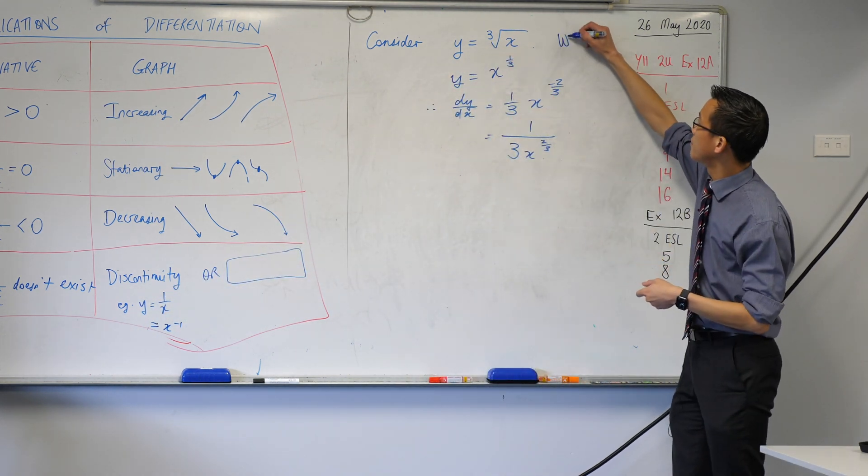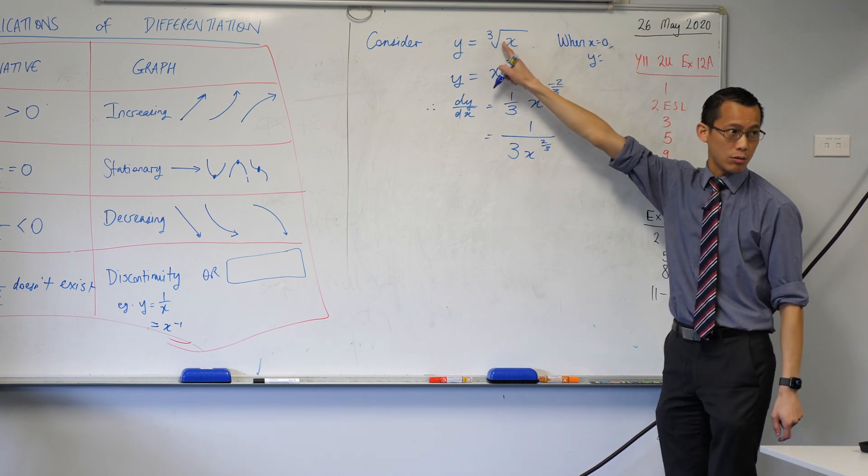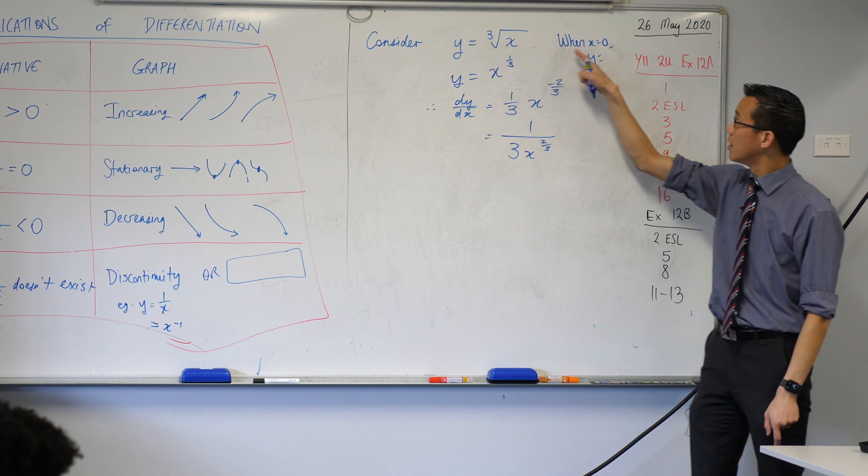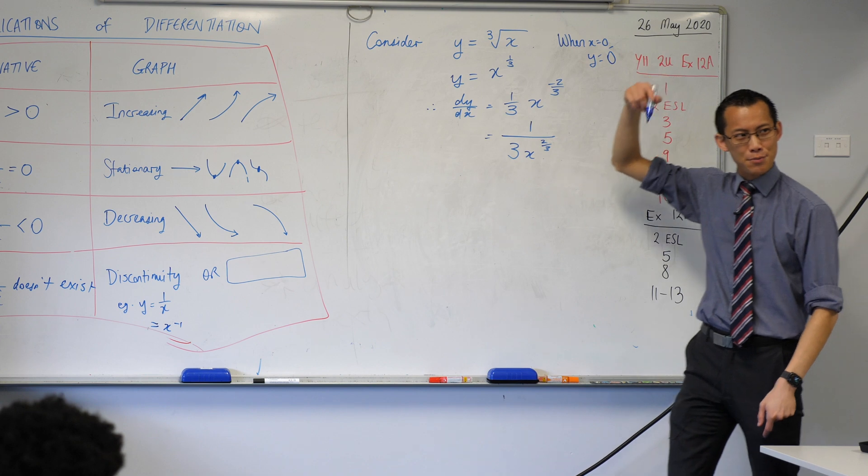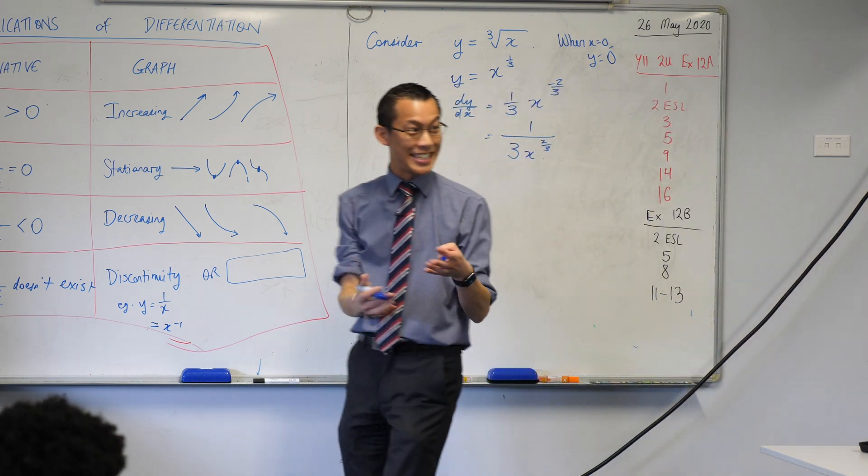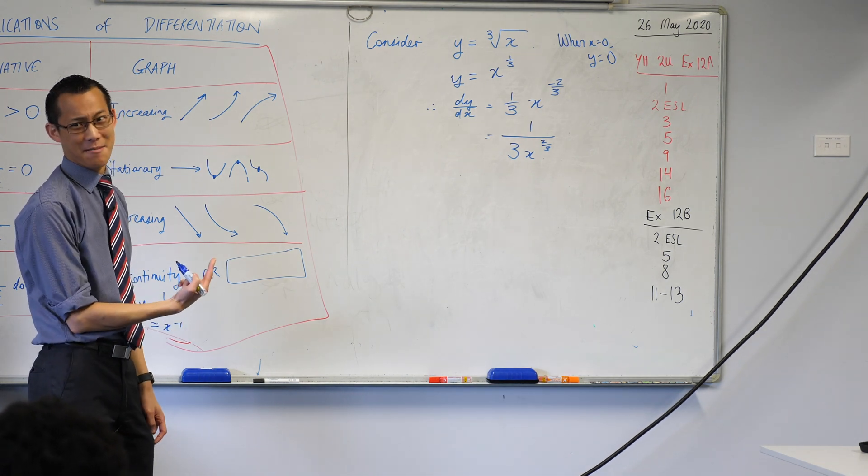Go back. Try this out. When x equals 0, what does y equal? What is the cube root of 0? 0. It's 0. It's the number you multiply by itself three times to get this. Well, 0 does exist. It's kind of important.